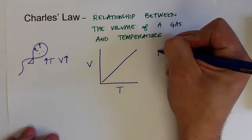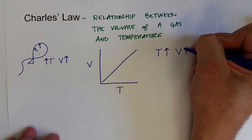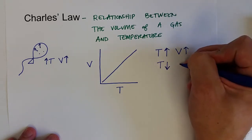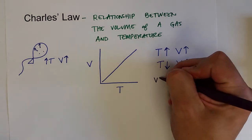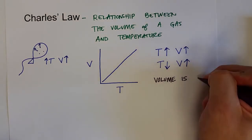Where as we increase the temperature, the volume goes up. If we were to decrease the temperature, the volume would go down. This is known as a directly proportional relationship. So volume is directly proportional to temperature of a gas.